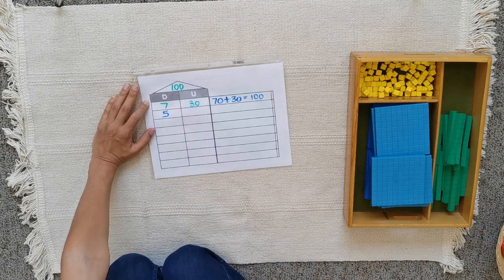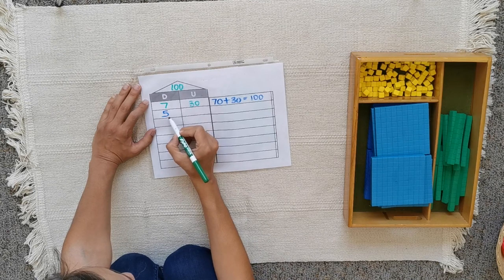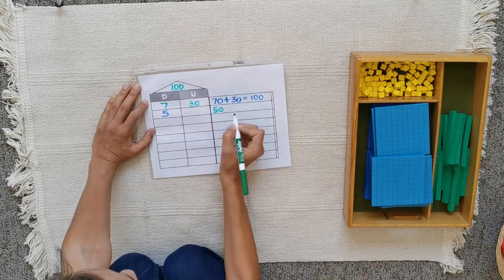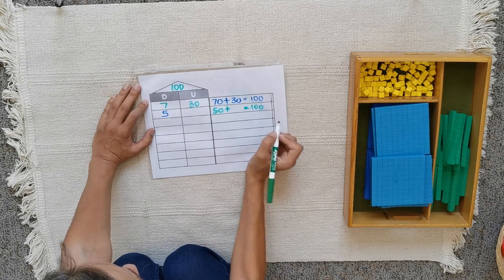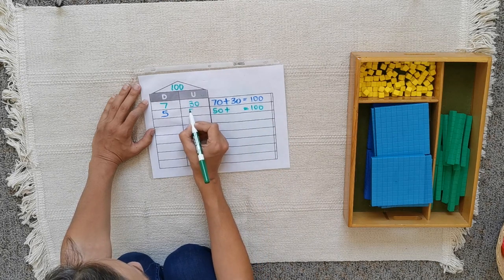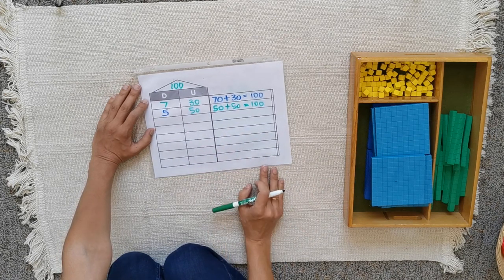And it's true, 70 plus 30 makes 100. Now it's my turn. Five tens. Five tens is 50, and I need to put... to make 100, I need to put 50 more. Easy. And it's true, 50 plus 50 makes 100.